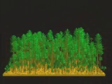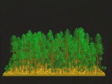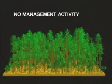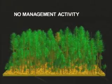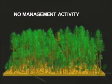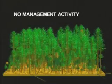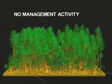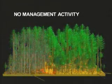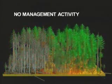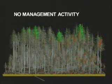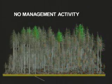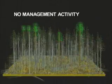First, look at what happens when a wildfire occurs in 2035 with no present management activities. You can see the stand growing for approximately 30 years from its present condition. When the wildfire occurs in 2035, it's quite intense. Crown fire occurs in a large portion of the stand, killing most of the trees.